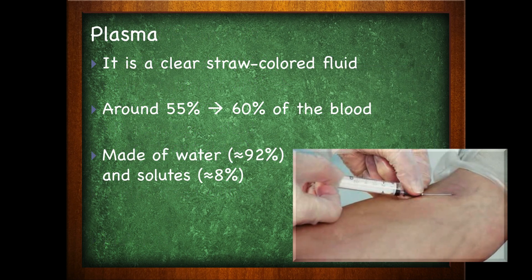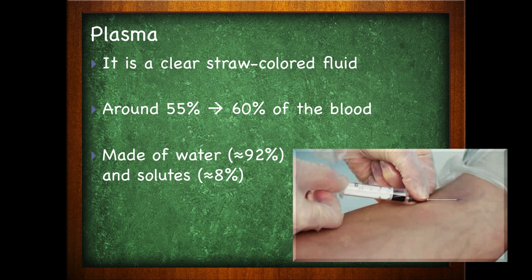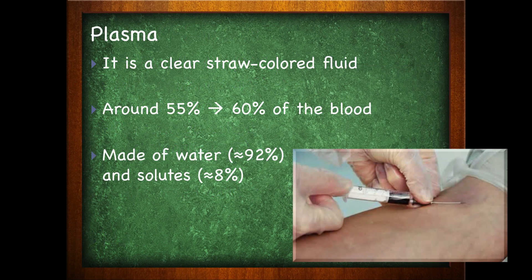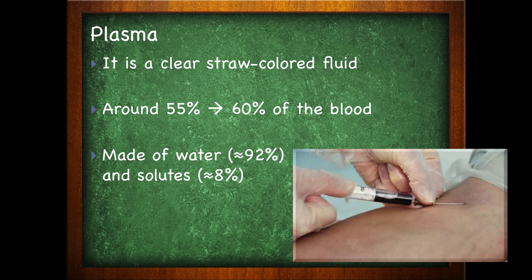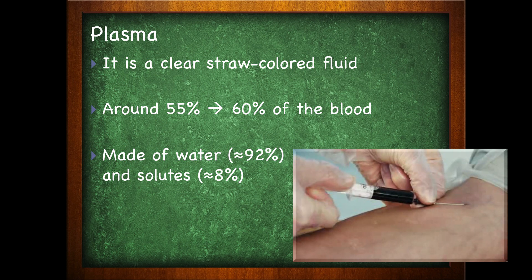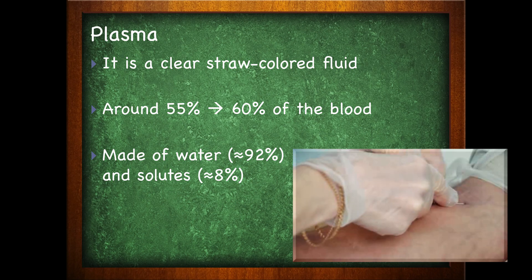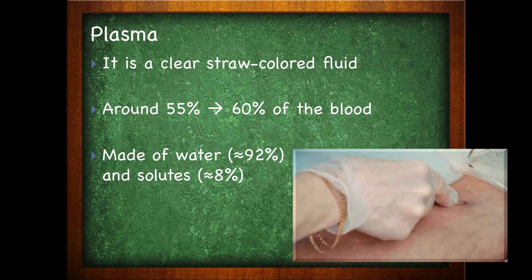Plasma, which is the fluid portion of blood, is a clear, straw-colored fluid. This makes up around 55% to 60% of the blood.